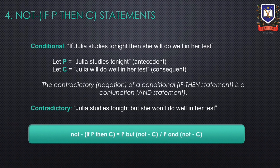A not-(if P then C) statement is the contradictory of a conditional. For example, consider the conditional: if Julia studies tonight, then she will do well in her test. Let P be the antecedent: Julia studies tonight, and let C be the consequent: Julia will do well in her test. The contradictory of a conditional is a conjunction. So the contradictory of this conditional is: Julia studies tonight but she won't do well in her test.